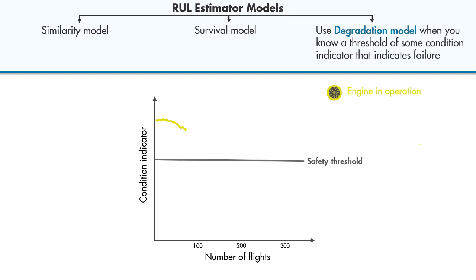We can use this information as follows. We can fit a degradation model to the condition indicator, which uses the past information from our engine to predict how the condition indicator will change in the future.